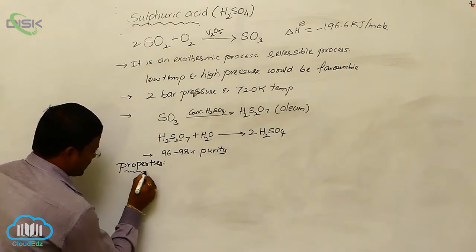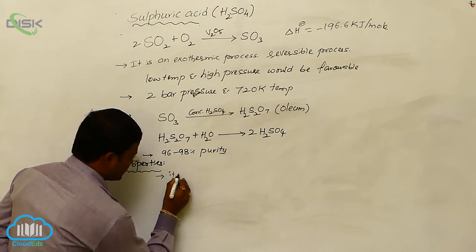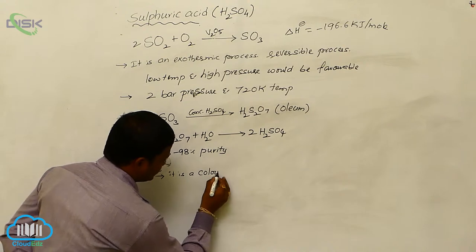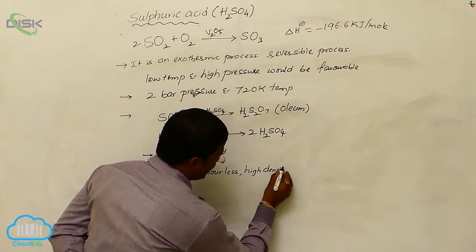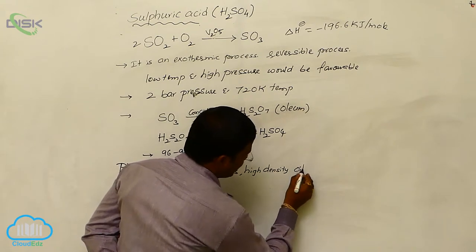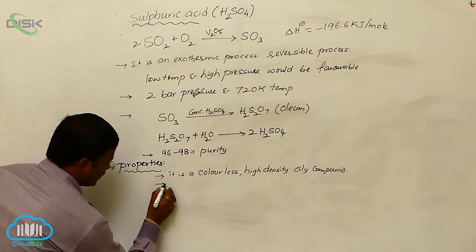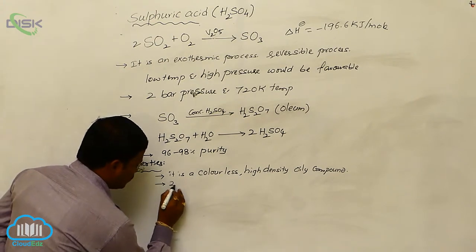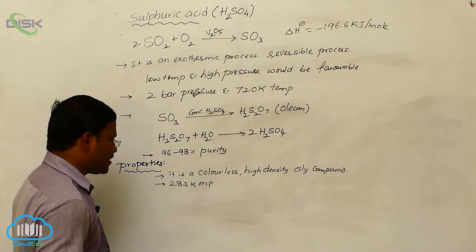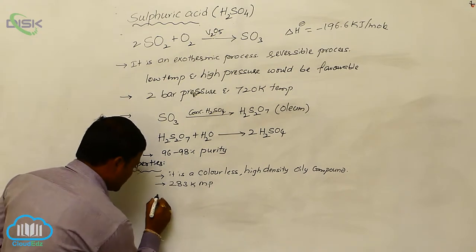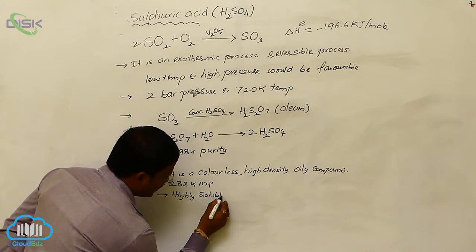Let us now learn about the properties of sulfuric acid. It is a colorless, high-density, oily compound, generally having a melting point of 283 Kelvin. Below 283 Kelvin it solidifies, and it is highly soluble in water.